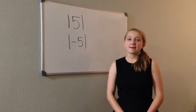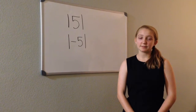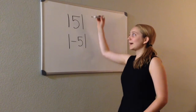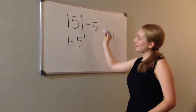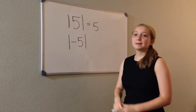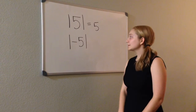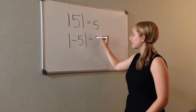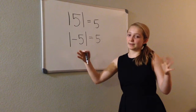Now let's talk about absolute value. Absolute value is the distance a number is from 0 on the number line. For example, the absolute value of 5 is 5, because it's 5 away from 0. Absolute value is always a positive number. So the absolute value of negative 5 would be 5, because negative 5 is 5 numbers away from 0.